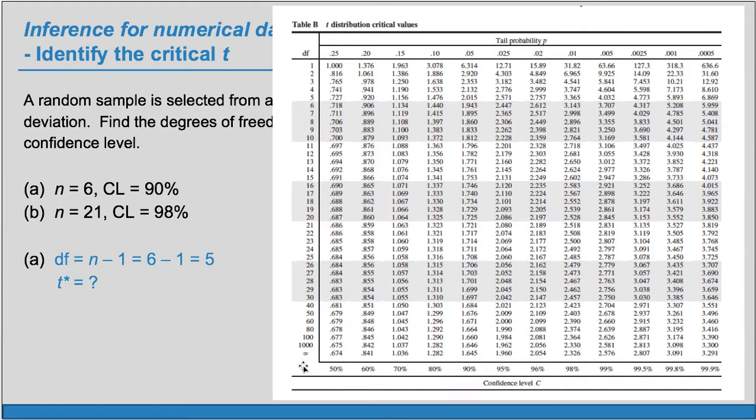So incidentally, if you need to find z-star, you use row infinity. But for t-star, we use row corresponding to the degrees of freedom. So here we're going to use row corresponding to df is 5.